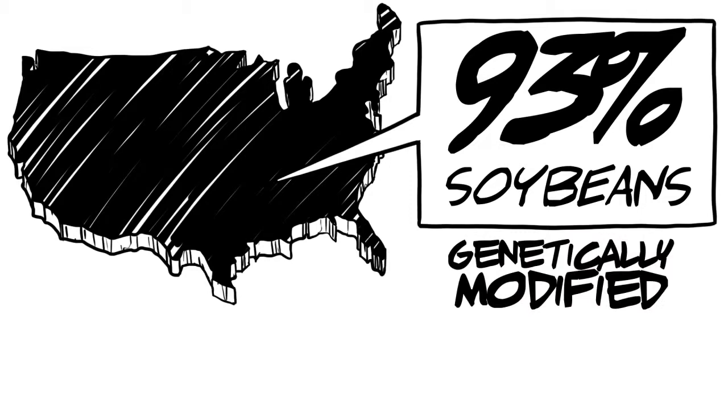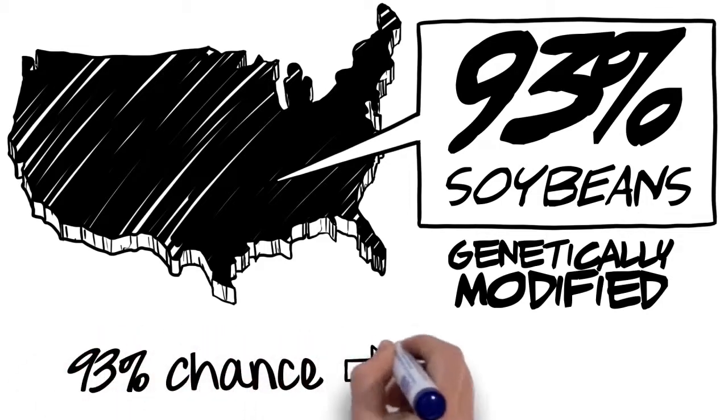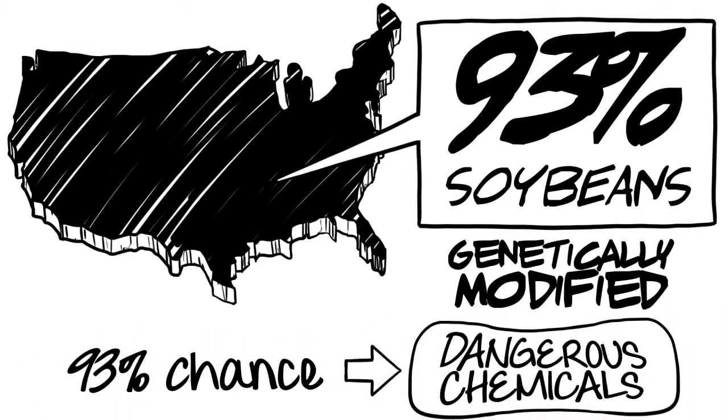So if you eat any soy products, there's a 93% chance you're consuming dangerous chemicals that pose a serious threat to your health. Genetically modified organisms, or GMOs, are foods that have had their DNA manipulated through artificial genetic engineering in a laboratory.